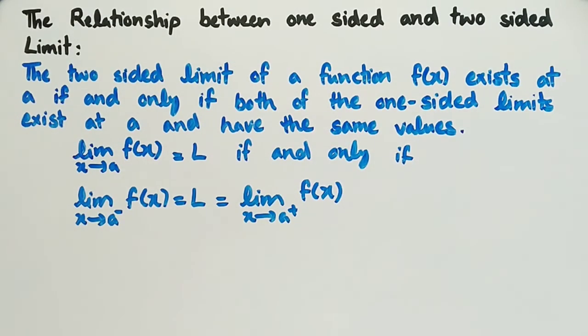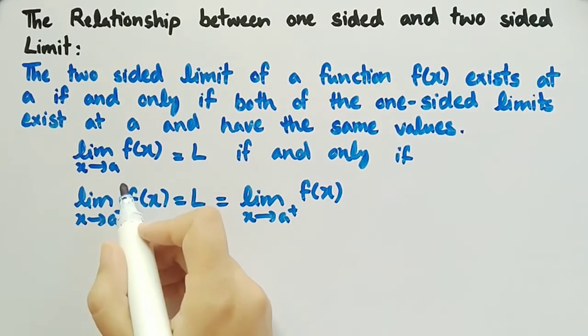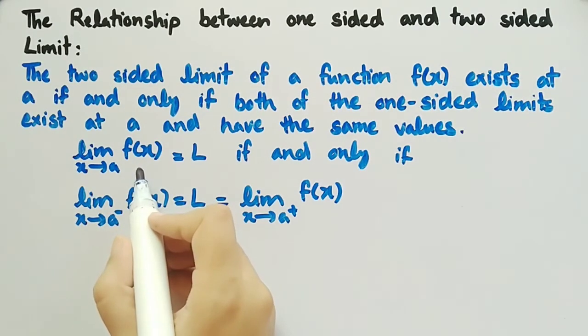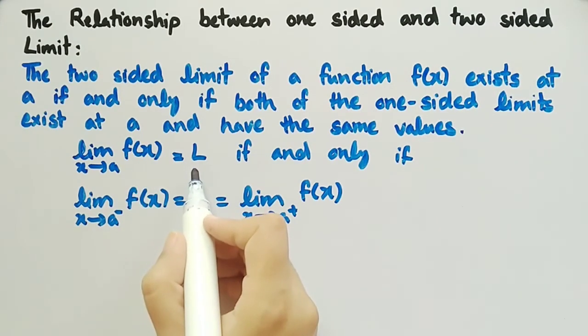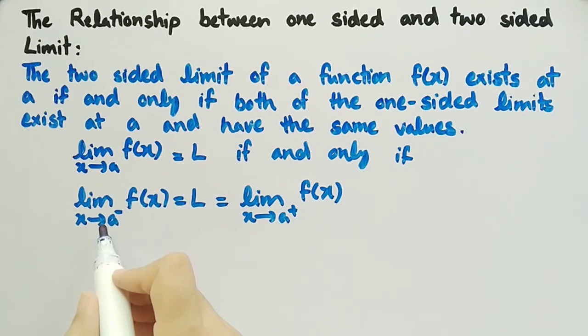In simple words, we can say that if x approaches a, then the limit of f(x) exists and is equal to L if and only if its right-hand limit is equal to its left-hand limit and both are equal to L.